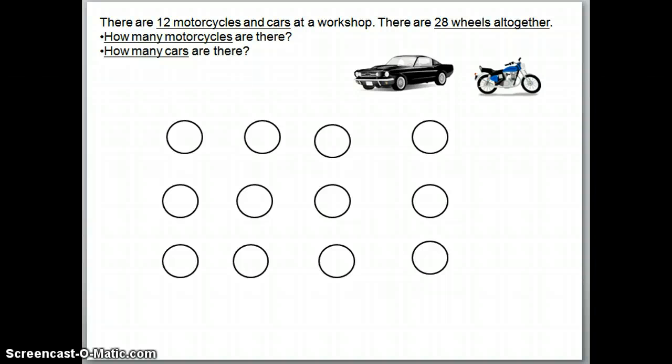We assume, we guess that they are all motorcycles. That means we choose the item that has less wheels first. Okay, whichever kind of question you do for this, you choose the one with the less items. So, motorcycle has only 2 wheels, cars have 4 wheels, so we choose motorcycles. We make all of these 12 things become motorcycles.